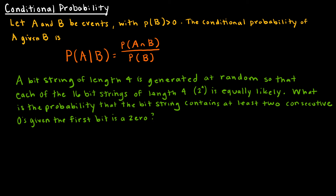Let's talk a little more about conditional probabilities. To formalize the definition: A and B are events with the probability of B greater than 0. The conditional probability of A given B is the probability of the intersection of A and B divided by the probability of B, because we're limiting our sample space down to just when B has already occurred. Let's look at an example so this makes sense.